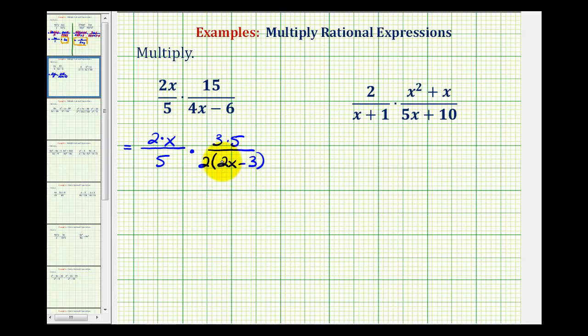Now that everything's in factored form, we can now simplify out the common factors. 2 over 2 would simplify to 1 because 2 divided by 2 is equal to 1. Here we have a 5 over a 5 that simplifies to 1. And again, we cannot simplify this x and this x because we cannot simplify across subtraction. So now we can multiply, knowing the product will be in simplest form.